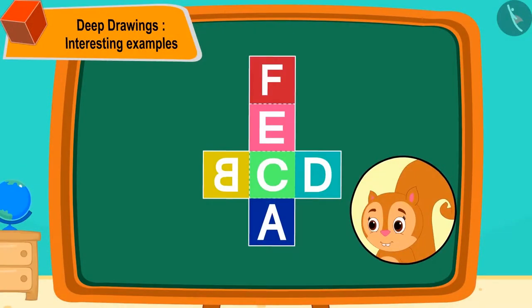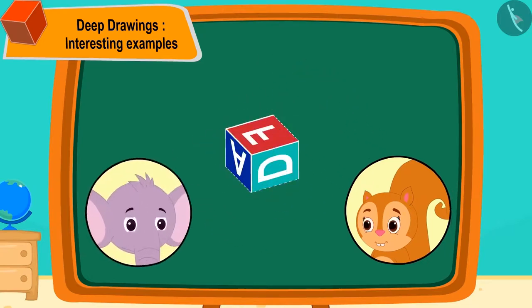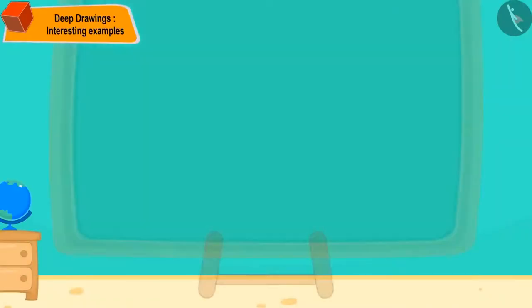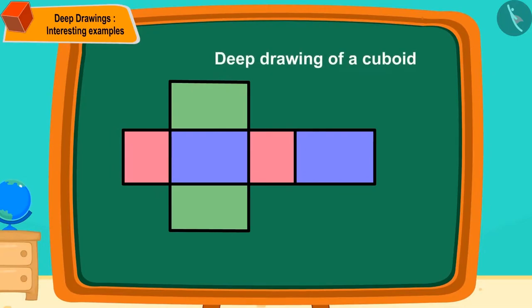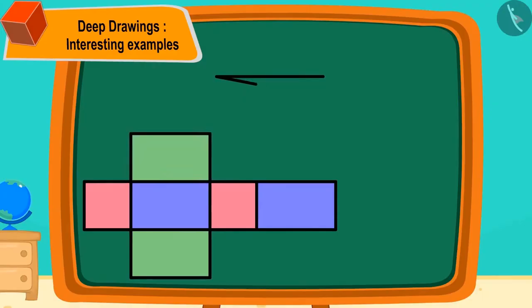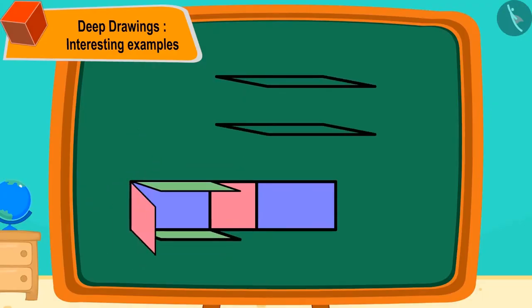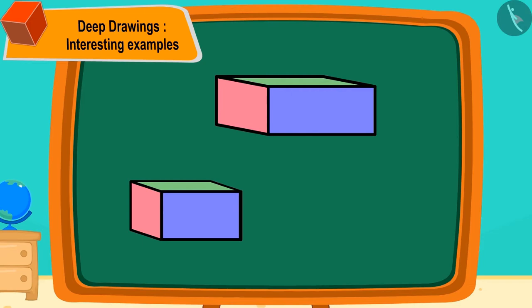Chanda made a dice by folding a net made of paper, and Chanda and Appu started playing their game. Children, you can now play a game of making a deep drawing of a cuboid with your friends. If you want, you can stop the video and make it. Children, you can make a deep drawing of a cuboid in this way.